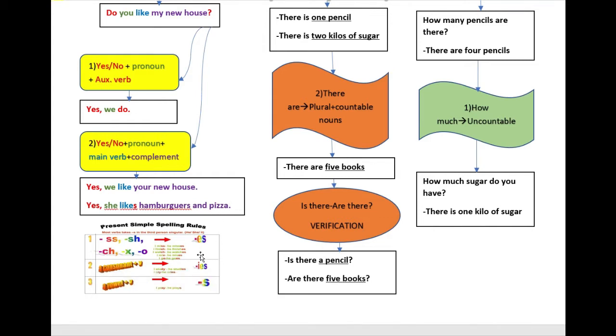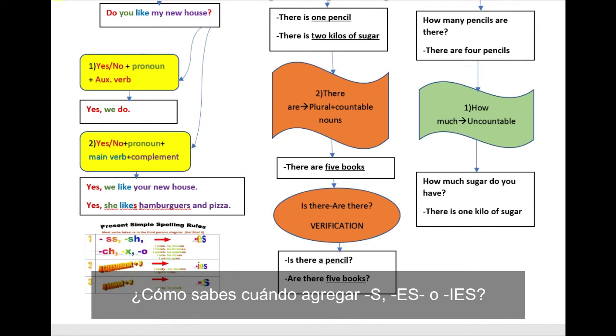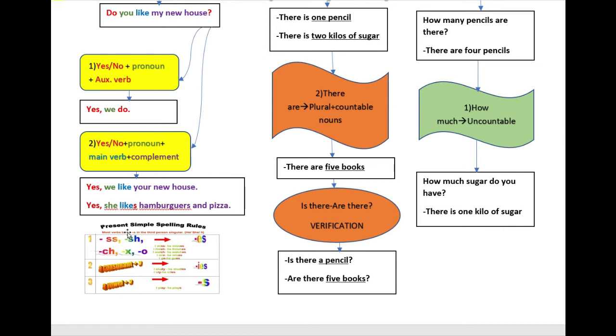Oh, how do you know when to add S, E, S, or I, E, S? Remember the present simple spelling rules. When the verb ends with double S, S, H, C, H, X, or an O, you have to change the end of the verb with E, S. For example, he misses, he finishes, he goes.